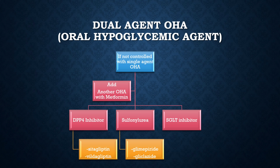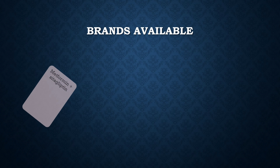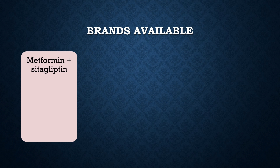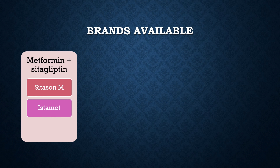You can also use the SGLT-2 inhibitor group, which includes dapagliflozin and empagliflozin. For example, brands for metformin plus DPP-4 inhibitor like sitagliptin include Cetasun M, Ishtamat, Chanomat, and others.